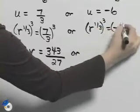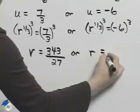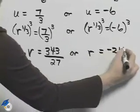We'll cube both sides of this equation as well. So we'll get r is equal to negative 216.